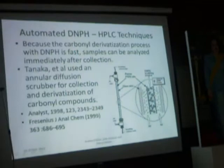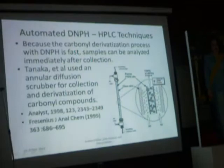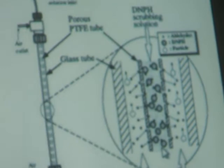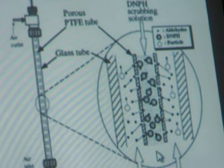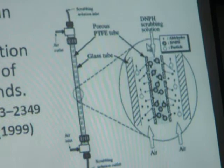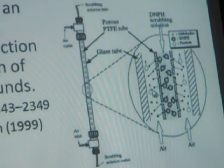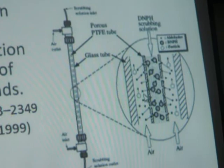The big issue with automating the technique is collection — collecting carbonyl compounds. One needs to be able to do that with high efficiency. A lot of these attempts have used a diffusion scrubber. An example is shown here where one has an inner tube with a DNPH solution flowing through it and an outer annular region with air containing carbonyl compounds flowing through it. The carbonyl compounds contact the derivatizing agent and are pulled into the solution.